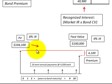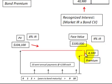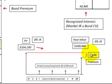If we're looking at a bond issued at a premium, its present value — what we receive for it — is greater than its face value. That difference is called a premium, and it has to be amortized over the life of the bond.